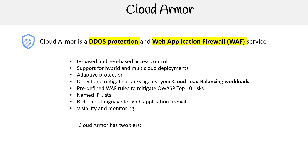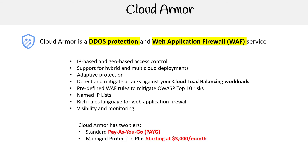Cloud Armor has two tiers: Standard — pay as you go — and Managed Protection Plus starting at $3,000 a month. It's pretty standard to see those two-tier prices for DDoS protection, but not that standard to see these two tools rolled into one — but that's just how GCP does it.